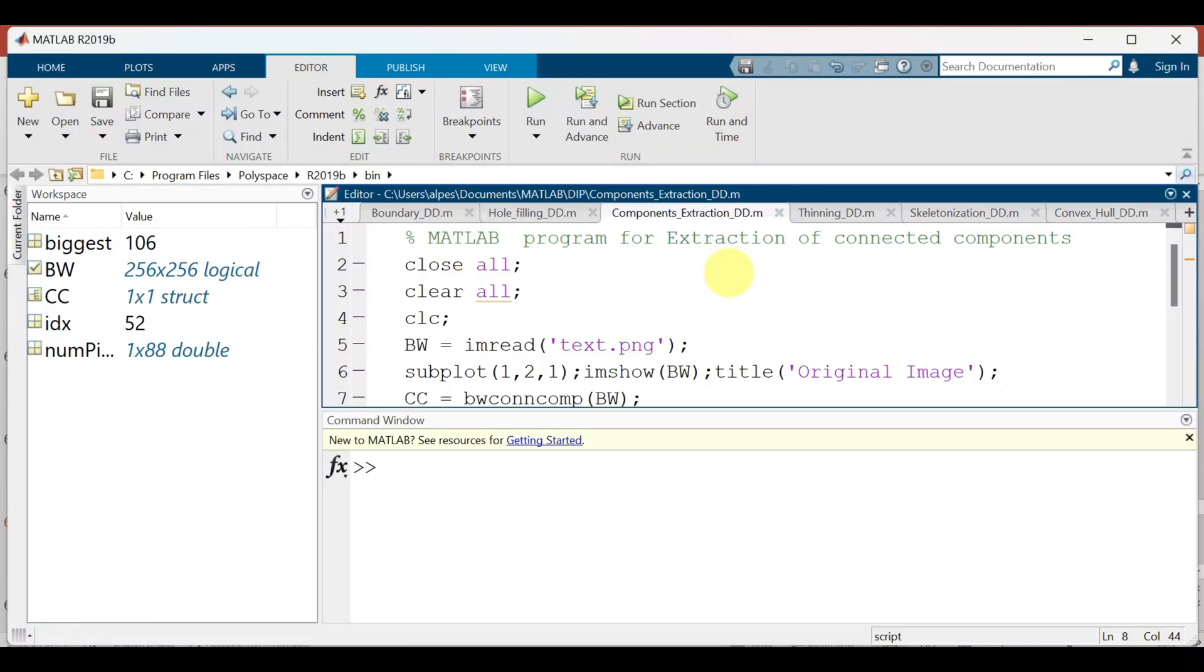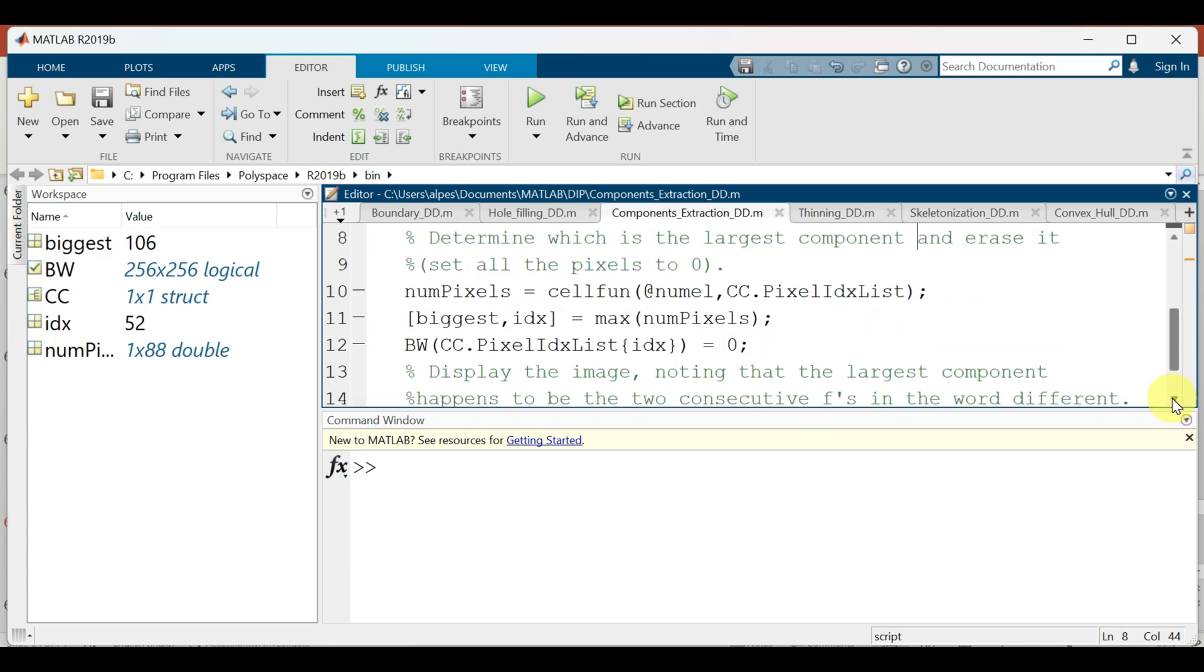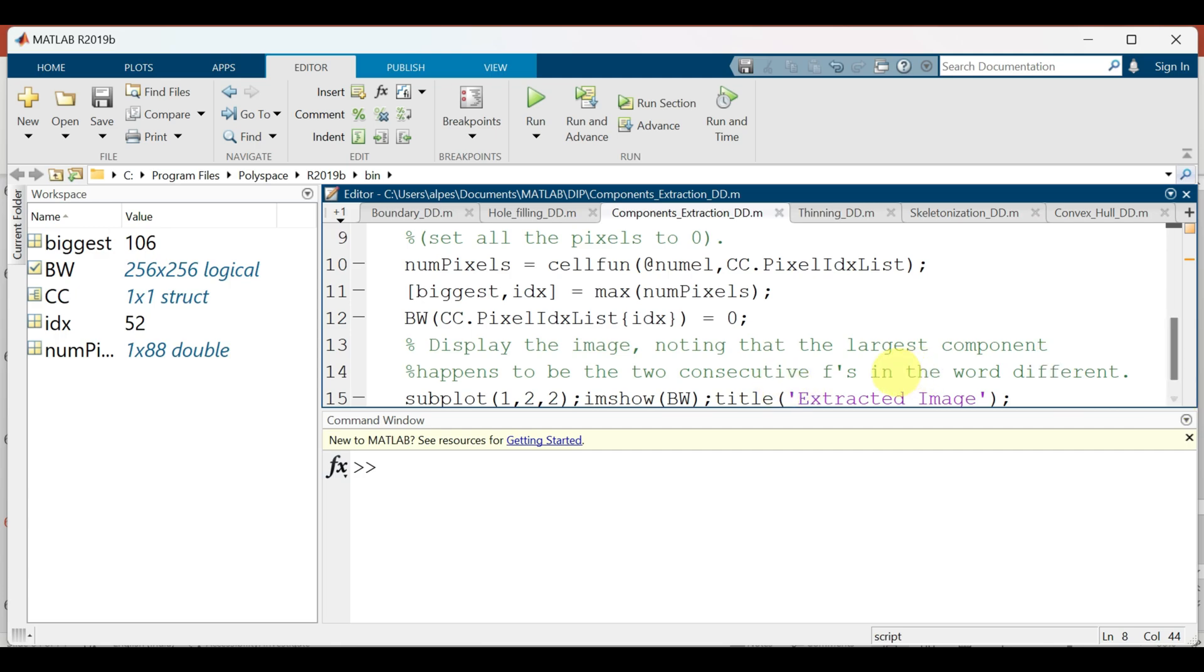Let us implement in MATLAB. This is the MATLAB program for extraction of connected components. And here we determine which is the largest component and we erase it. That is we set all the pixels to 0. So in the text image the largest component are two consecutive f's that come in the word different and we will be erasing these two f.